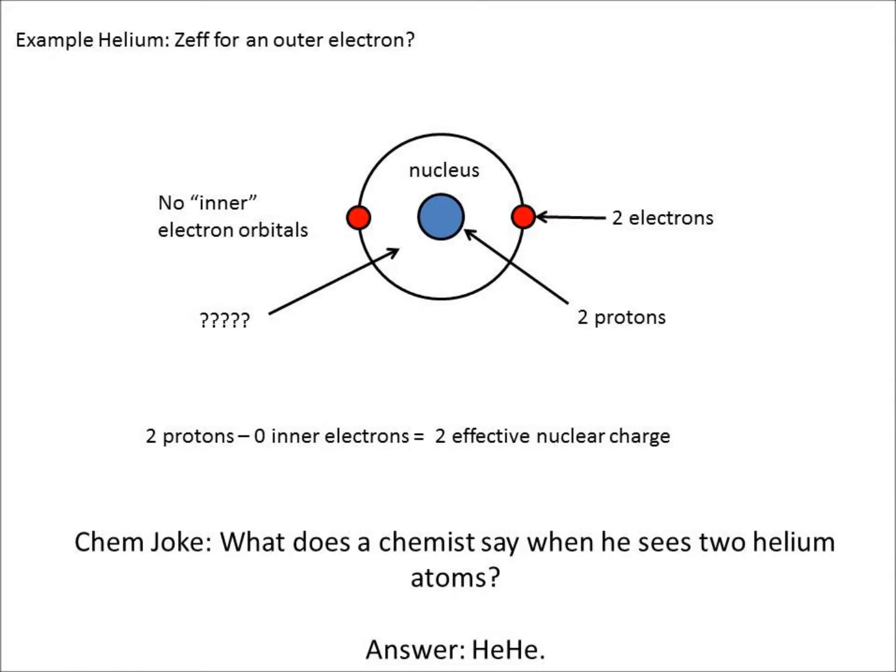For example, helium has two protons and two electrons. To find the effective nuclear charge on a valence electron, there are two protons and no inner electrons, or electrons on an inner orbital. Therefore, two minus zero is two. So the effective nuclear charge on an outer electron is two.